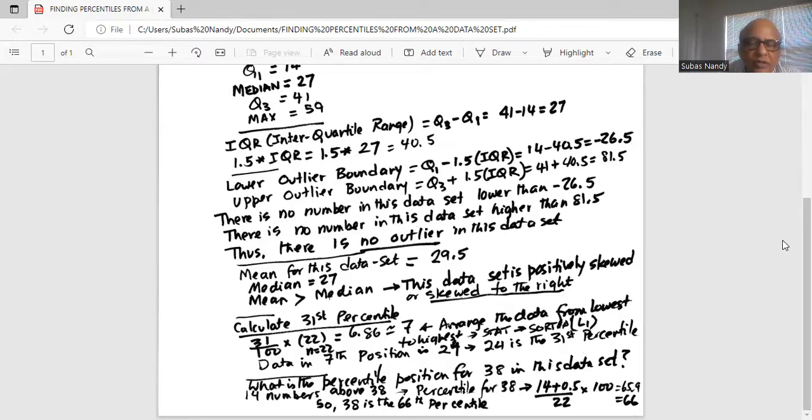Inside the parenthesis, we type L1, which is L1 is second one. Close the parenthesis and hit enter. It says done. And then we go to stat 1, edit. And we find out the data in the seventh position is 24.